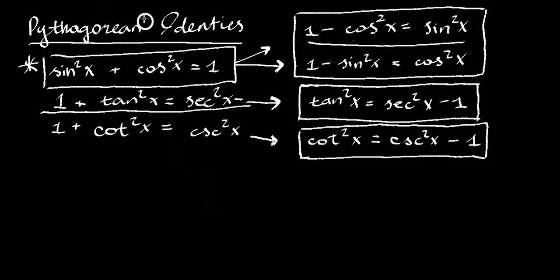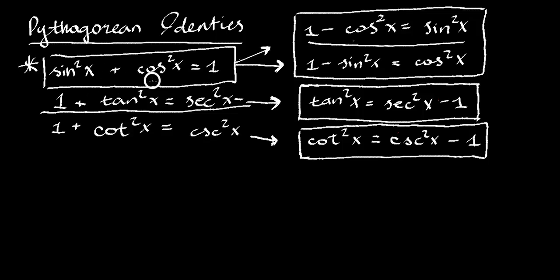It's the Pythagorean identities. The reason I've starred and highlighted this one is because this is the main identity: sine x squared plus cosine x squared equals 1. All these other ones I have written down basically all come from this.